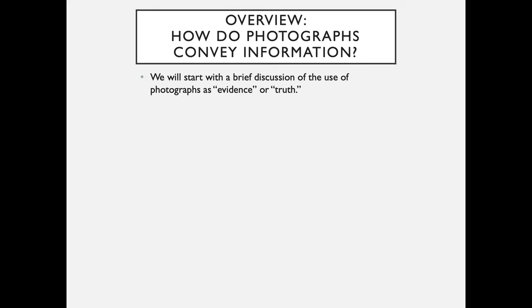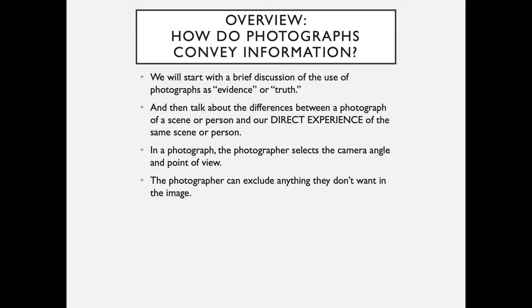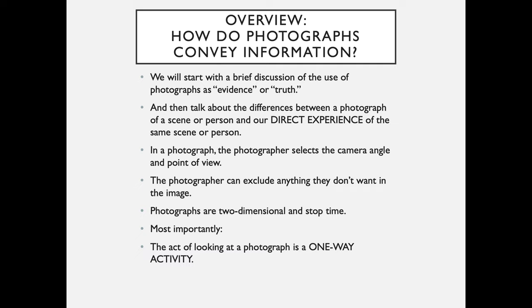How do photographs convey information? We will start with a brief discussion of the use of photographs as evidence or truth, and then talk about the differences between a photograph of a scene or person and our direct experience of the same scene or person. In a photograph, the photographer selects the camera angle and point of view, and can exclude anything they don't want in the image. Photographs are two-dimensional and stop time. Most importantly, the act of looking at a photograph is a one-way activity — the subject of the photograph can't look back at the viewer.